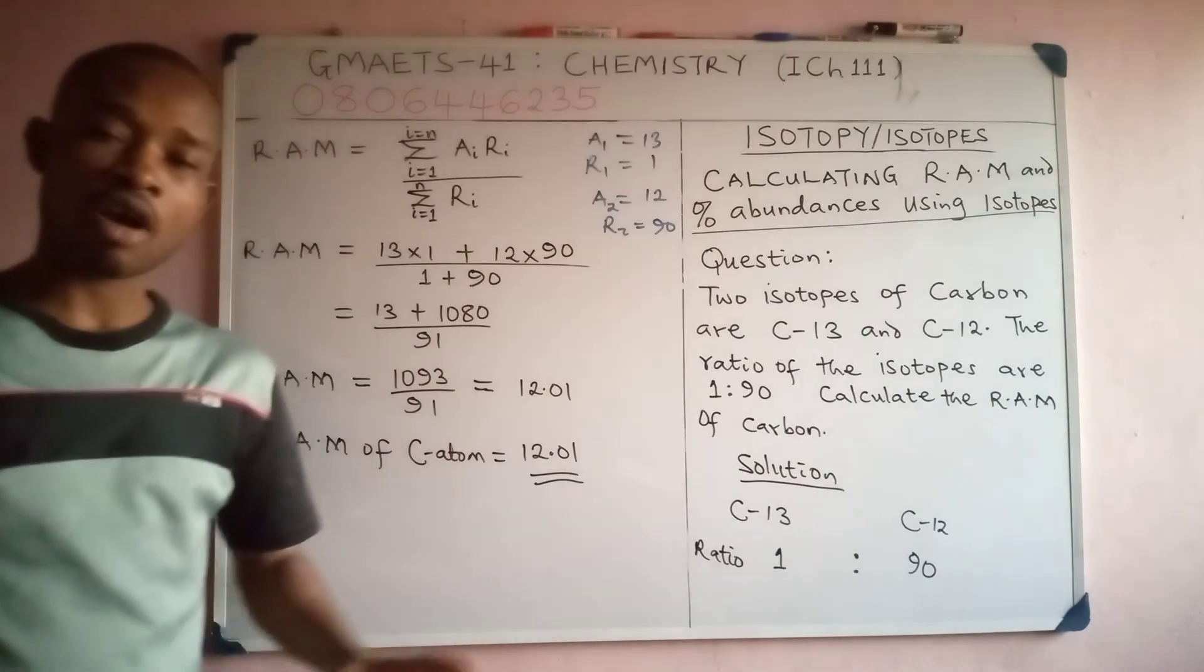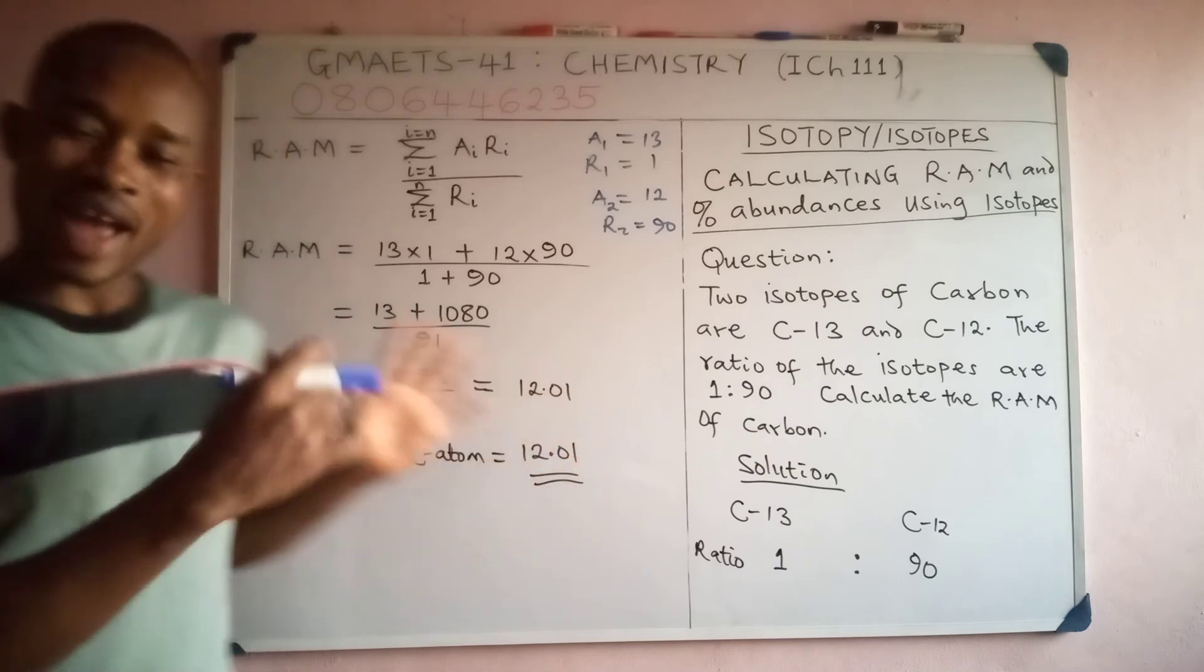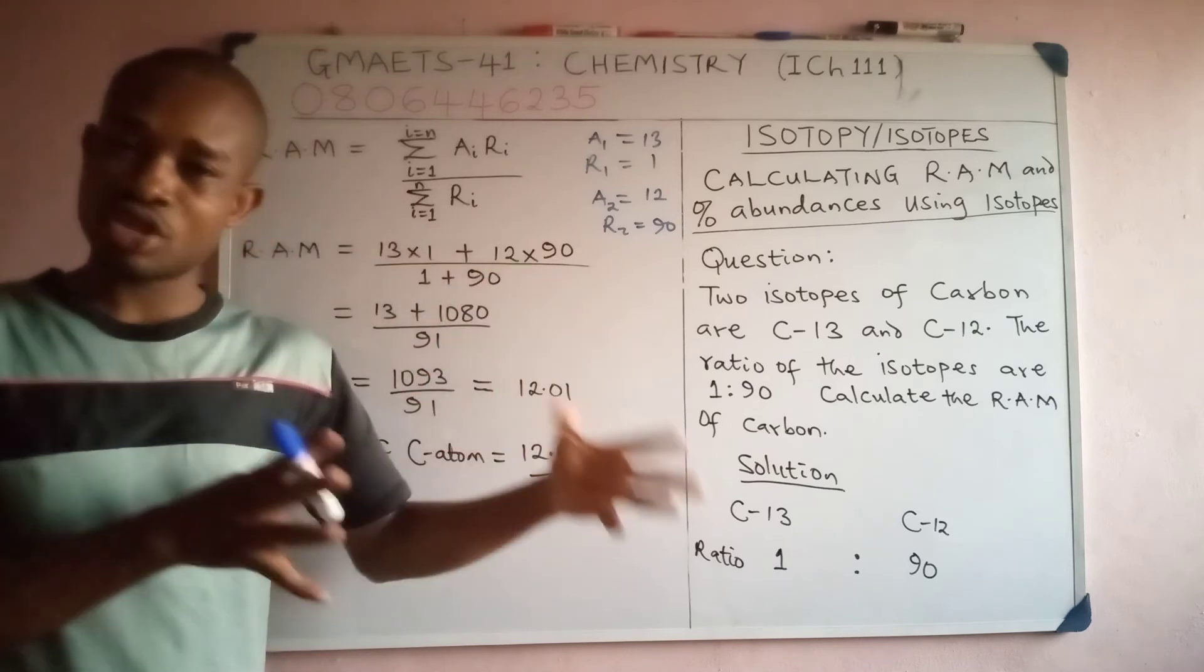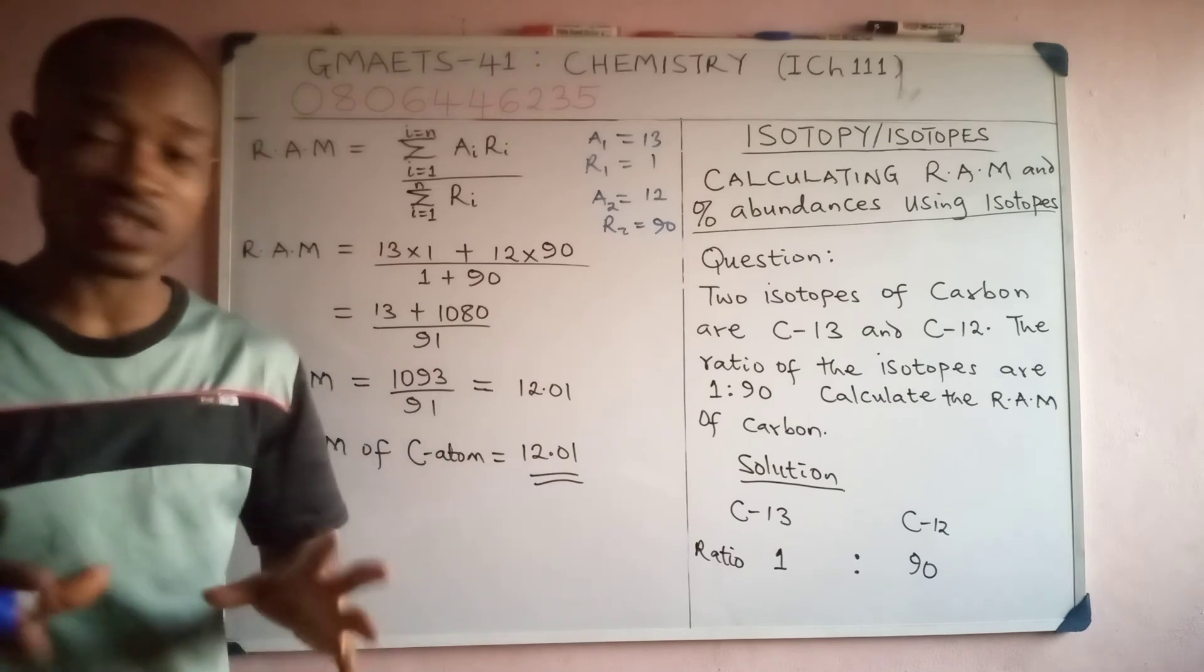Now don't forget what happens here. You see that the formula we used in this case is the ratio-related formula for calculating the relative atomic mass. In the question, they gave us mass number and the ratios of the carbon isotopes.